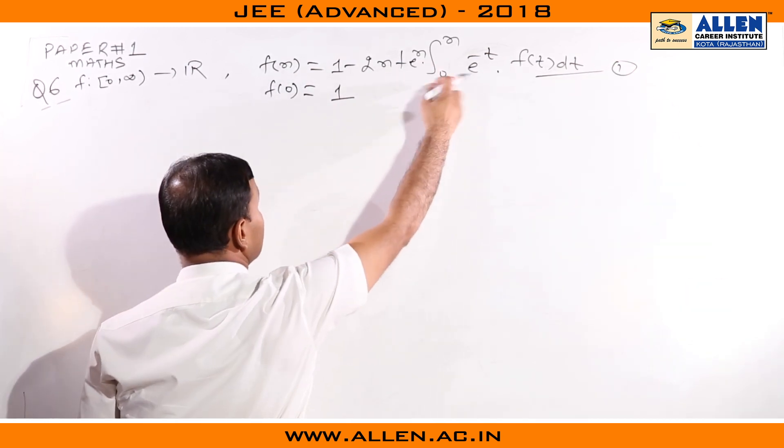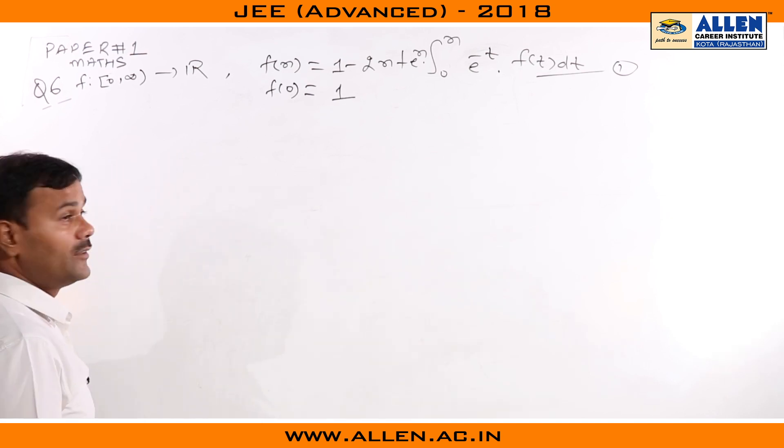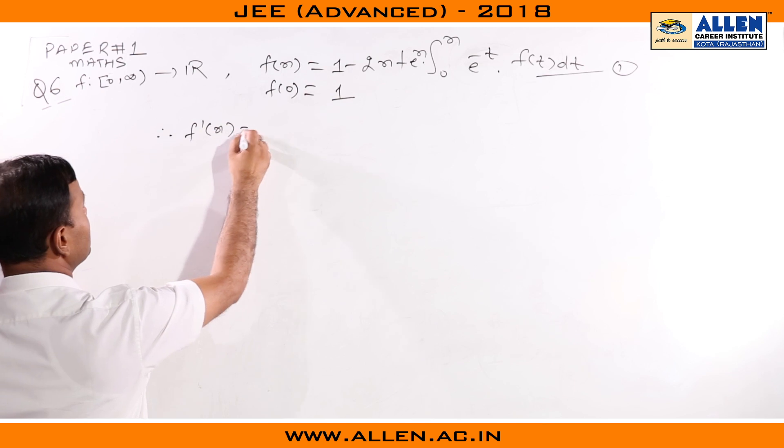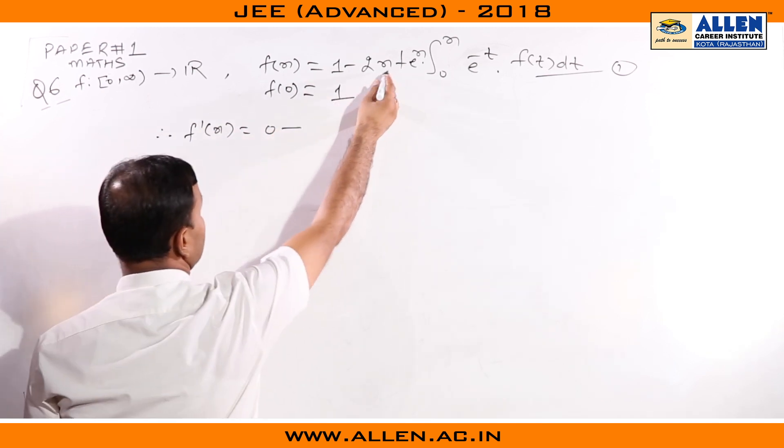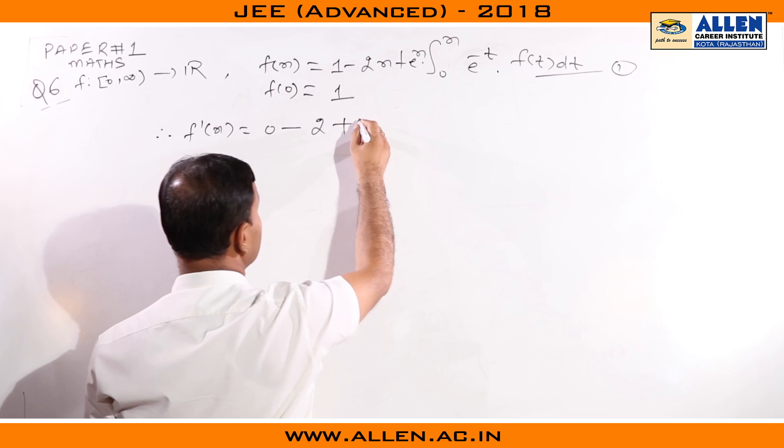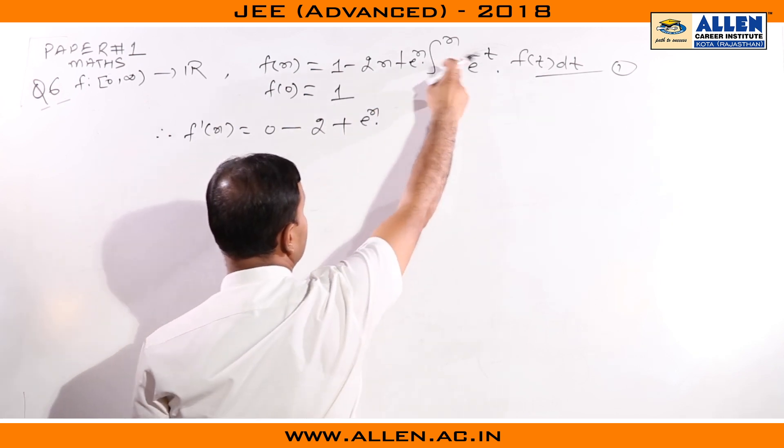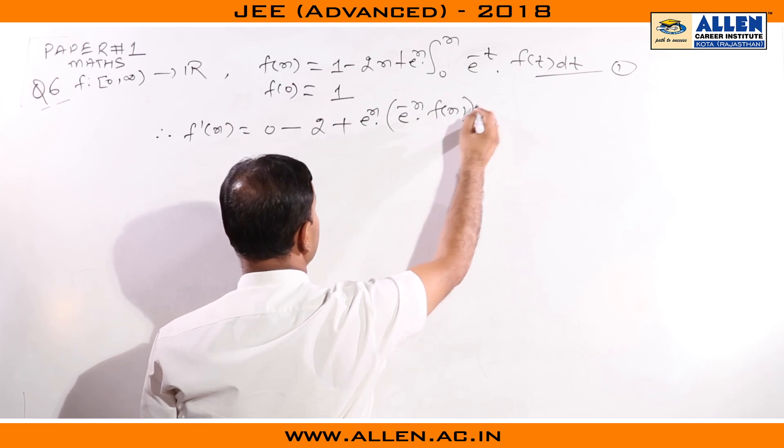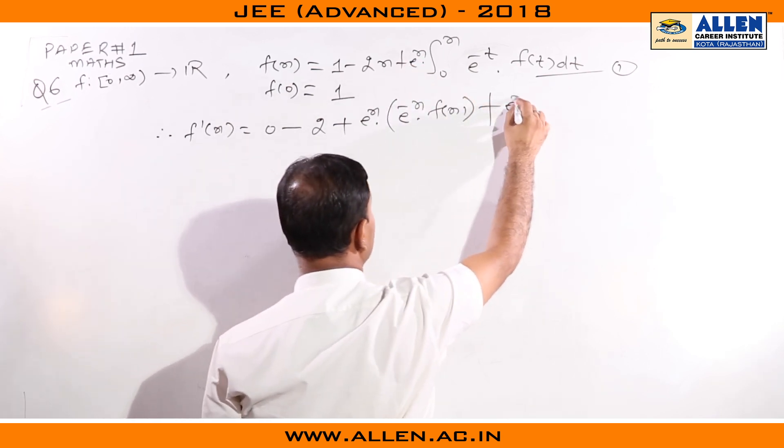We get f'(x) = -2 + applying product rule: keeping this function constant we take derivative of this using Leibniz rule, plus we find derivative of this function and keep the other constant.